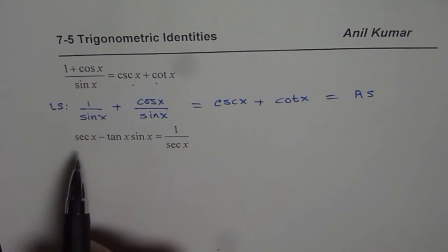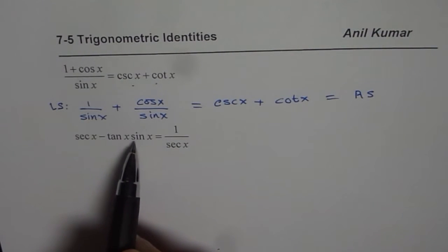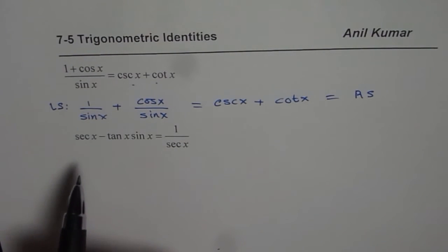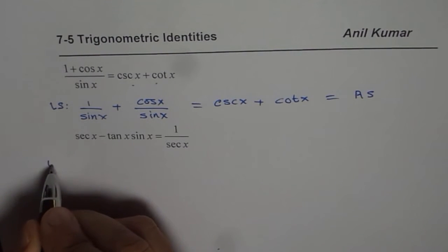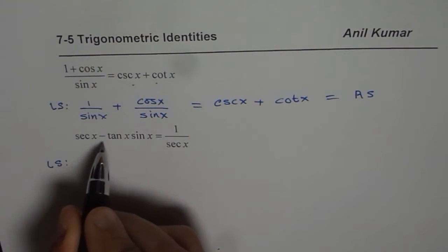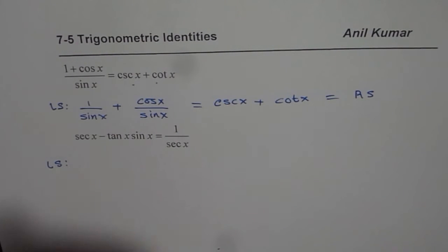The next one now is secant x minus tan x sine x equals 1 over secant x. So let's write these terms in terms of sine and cosine. In this case, we should definitely start from the left side. It is more complicated and you can simplify.